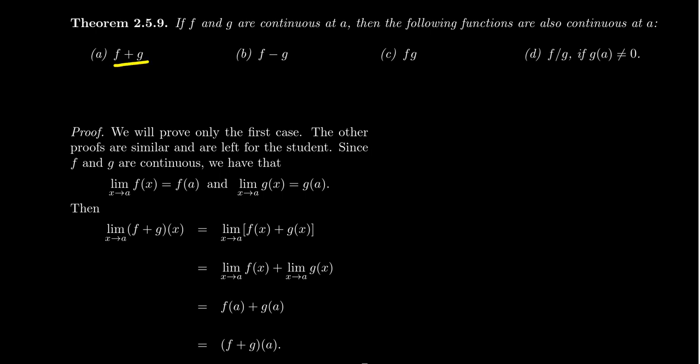If f and g are continuous at a, then f plus g will be continuous at a, and so will f minus g, and so will f times g. The one potential exception is when you do division: f divided by g will be continuous so long as g of a is not zero. If the denominator goes to zero, then continuity is not guaranteed.